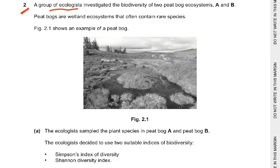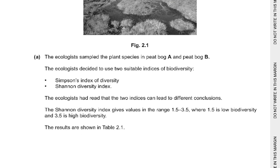A group of ecologists investigated the biodiversity of two peat bog ecosystems, A and B. Peat bogs are wetland ecosystems that often contain rare species. The ecologists sampled the plant species in peat bog A and B.